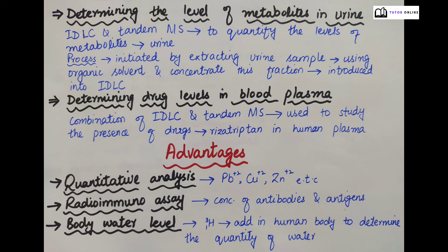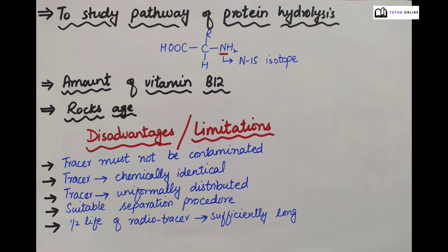Advantages of IDA: IDA is used for quantitative analysis of lead, copper, and zinc ions. By radioimmunoassay, we determine the concentration of antibodies or antigens in the human body. Using tritium isotope of hydrogen added to the human body, we can determine the amount of body water. To study the pathway of protein hydrolysis, the N-15 isotope is entered into the human body to trace the pathway. IDA is also used to calculate the amount of vitamin B12 and for determination of the age of rocks.